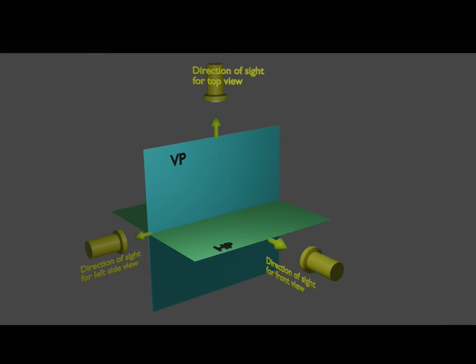In this figure you can see two reference planes mutually perpendicular to each other — one is the vertical plane and the other is the horizontal plane. They are represented by the alphabets VP and HP and are called principal planes. The intersection of these two mutually perpendicular planes is a line, and that is the reference line XY.